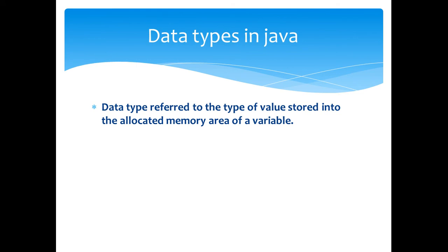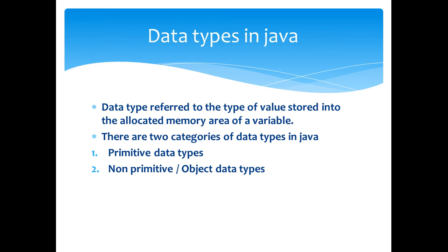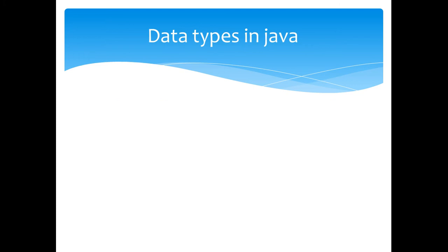A data type is referred to the type of data values stored in the allocated memory of a variable. There are two categories of data types available in Java. The first one is the primitive data types and the second one is non-primitive or object data types.